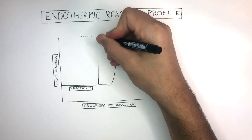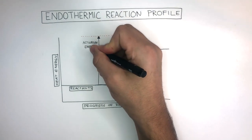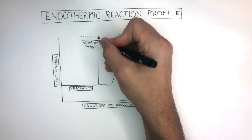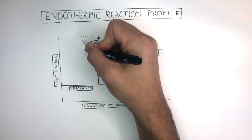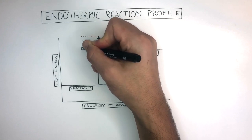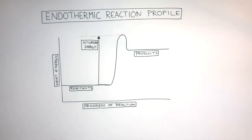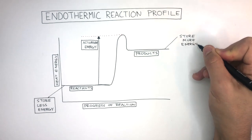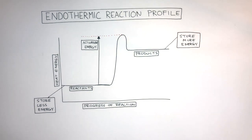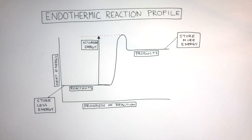From the reactants to the top of the hump is the activation energy. Every chemical reaction has an activation energy, but the activation energies of endothermic reactions are bigger than those of exothermic reactions. In an endothermic reaction, the reactants store less energy and the products store more energy — we can clearly see this because the products are higher up compared to the reactants. An endothermic reaction profile can be recognized by the reactants being lower down, the products being higher up, and the activation energy hump being much bigger.